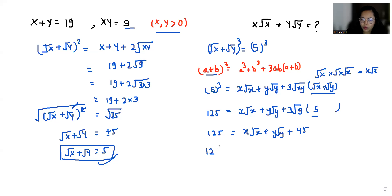So 125 minus 45 is x root x plus y root y, which is 80. x root x plus y root y is 80.